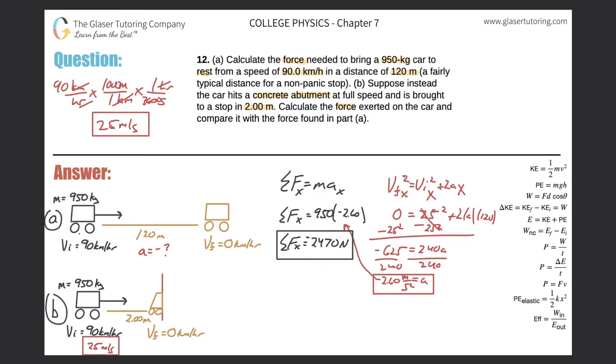Now what we need to do is calculate the new acceleration. This part of the problem is virtually the same. The sum of the forces in the x direction will equal ma. I know the mass of the object is 950 kilograms, so I need to find that acceleration.